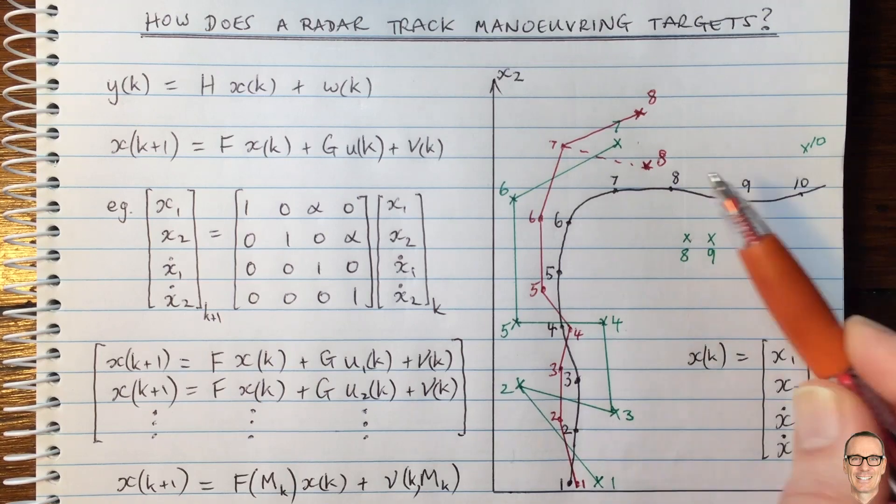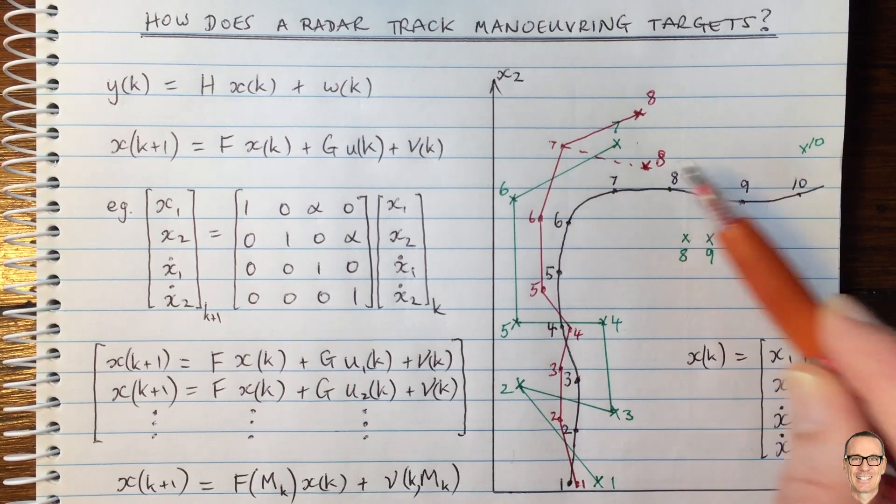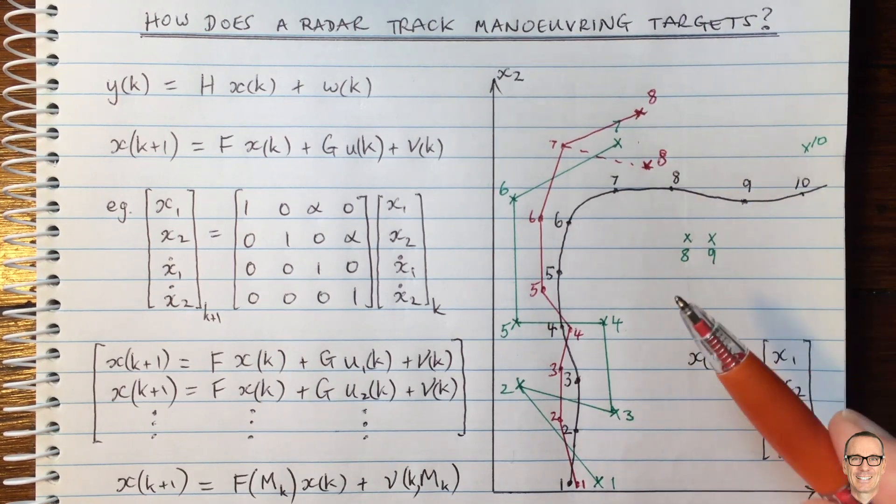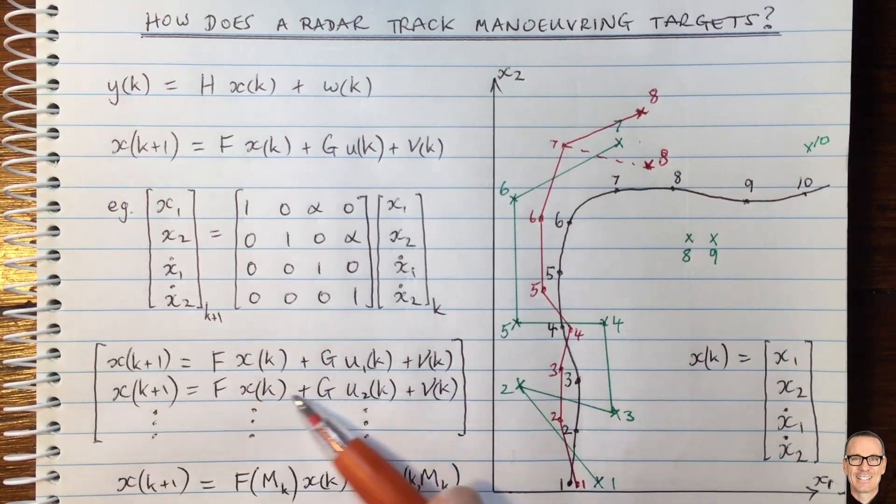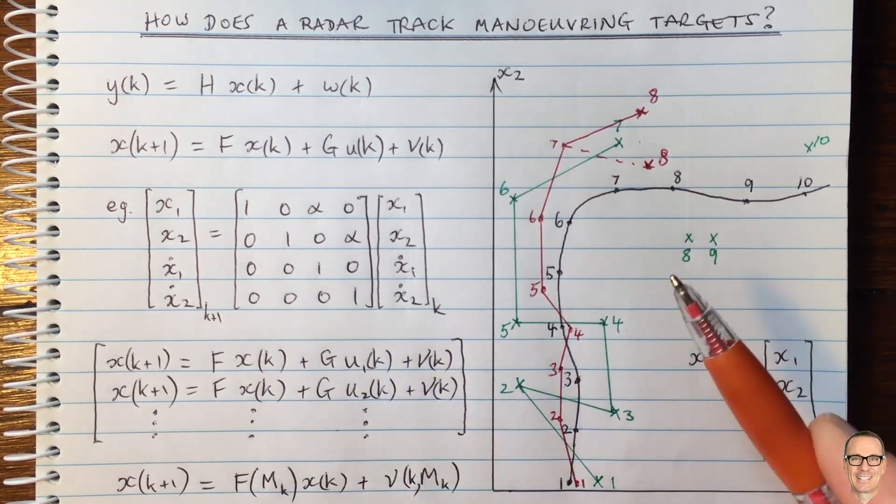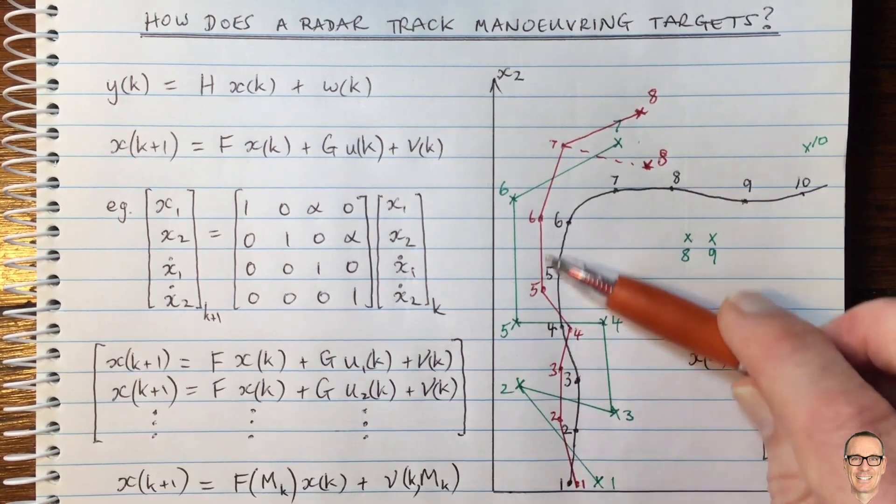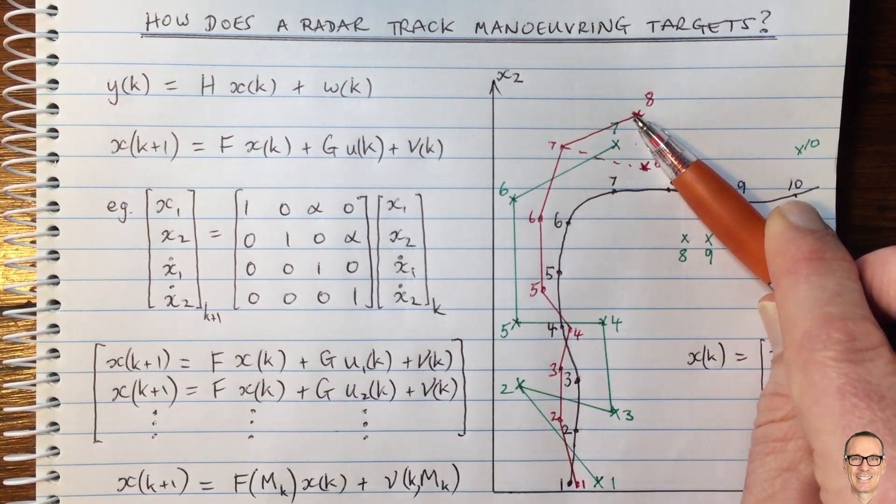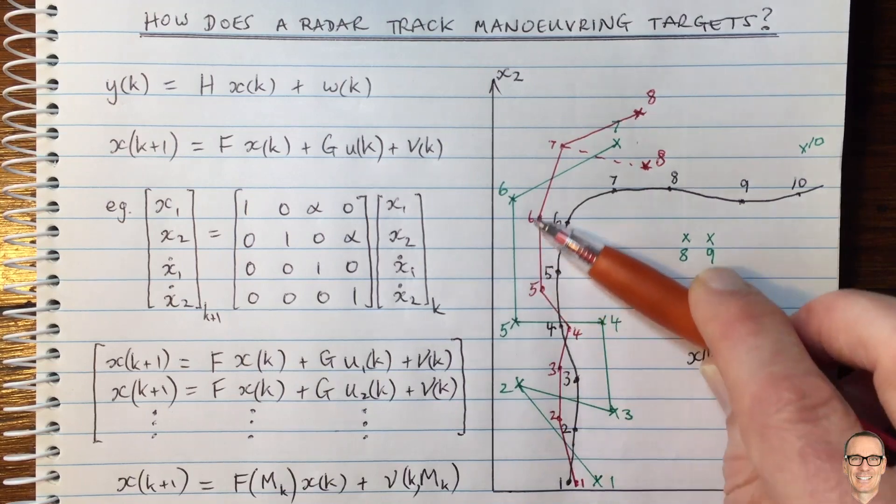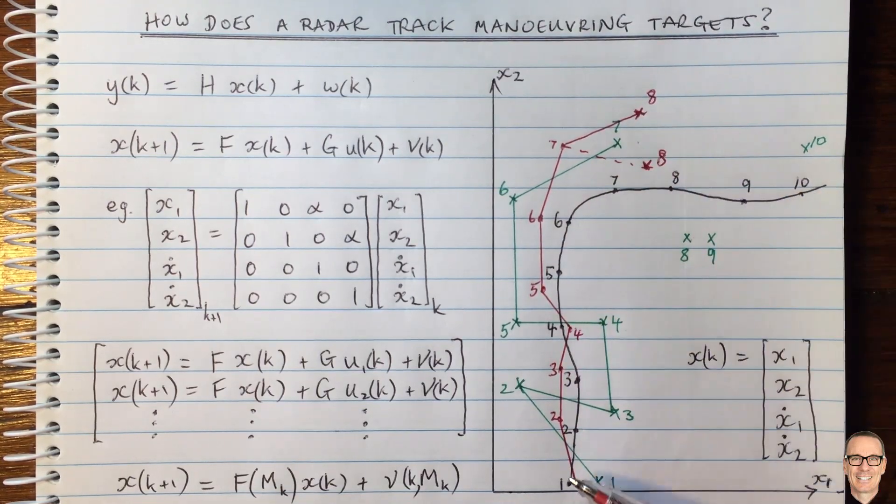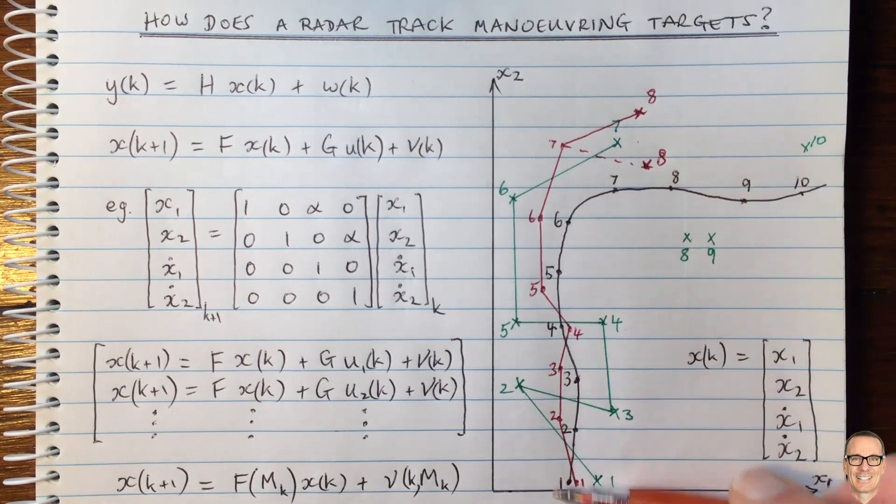And another one I wanted to mention is the particle filtering approach. So in particle filtering, you're not running separate models for different maneuvers, but you're running multiple estimates of where the location is. So instead of just having one estimate and having one red line up here, you run multiple estimates going up here in a particle filter mode.